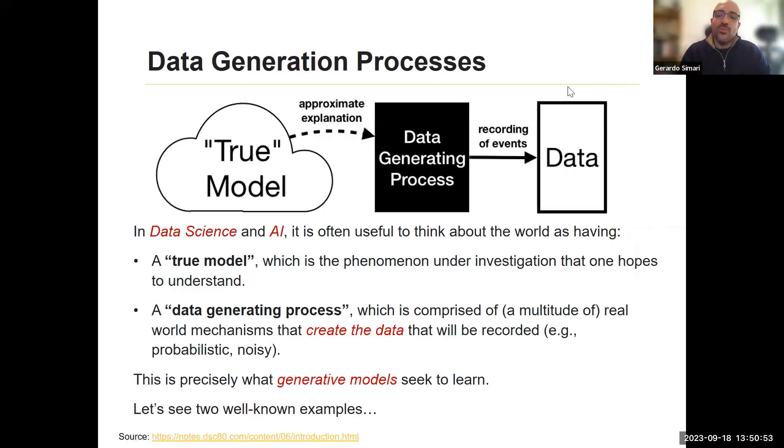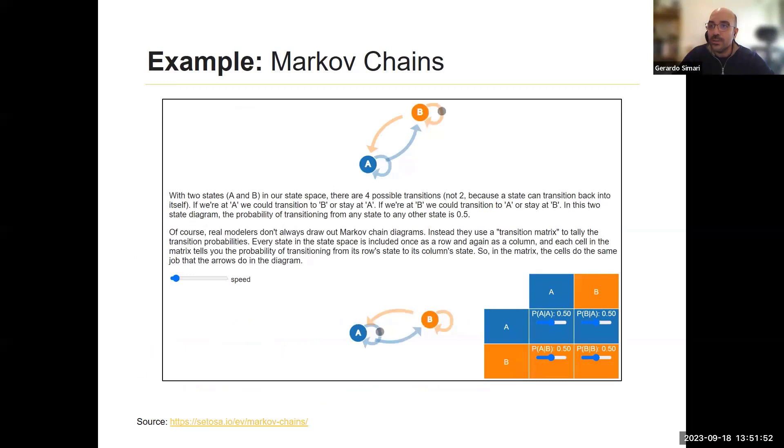So generative models assume that the world behaves kind of like this, that there's some sort of true model provided by the world. This is what we're trying to learn. And then what you come up with is a data generating process that you can just use to generate data. It's often useful in AI and data science to think about the world in this way. The true model is the phenomenon that you're investigating that you hope to understand, and then the data generating process is comprised of real-world mechanisms that create the data. And that is precisely what generative models seek to learn.